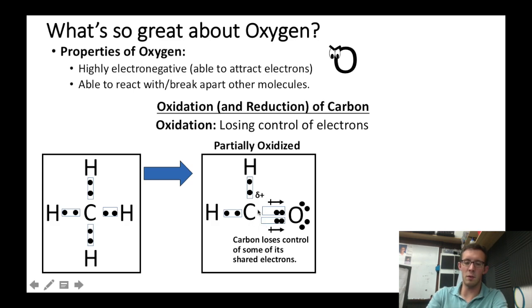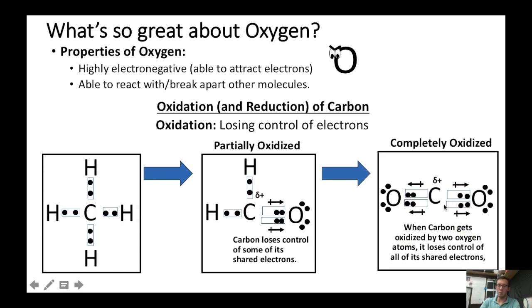Now if this molecule were to be exposed to more oxygen, carbon could become completely oxidized, that is it could lose control of all of its shared electrons. Now it's possible for this process to reverse, that is, carbon can regain control of its electrons in a process called reduction. And if we were to go all the way back to our original state, we'd say that carbon has been completely reduced.